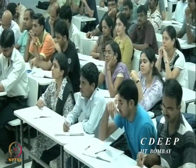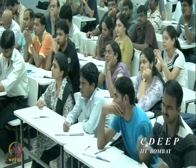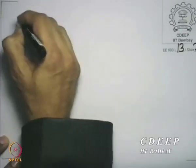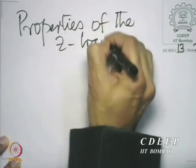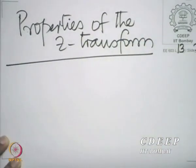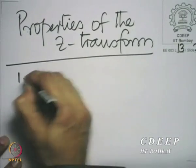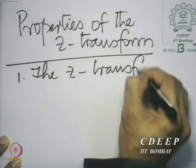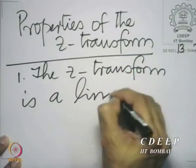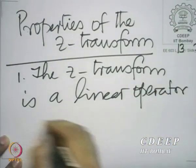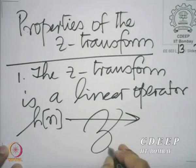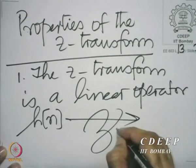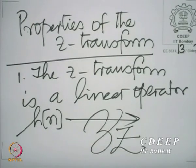Let us look at the properties of the Z-transform as we did for the discrete time Fourier transform. Let us first look at the linearity. It is almost trivial to show that the Z-transform is linear, or it is a linear operator. If you think of the Z-transform as an operator, it is denoted by script Z — both forms are used as symbols for taking the Z-transform.